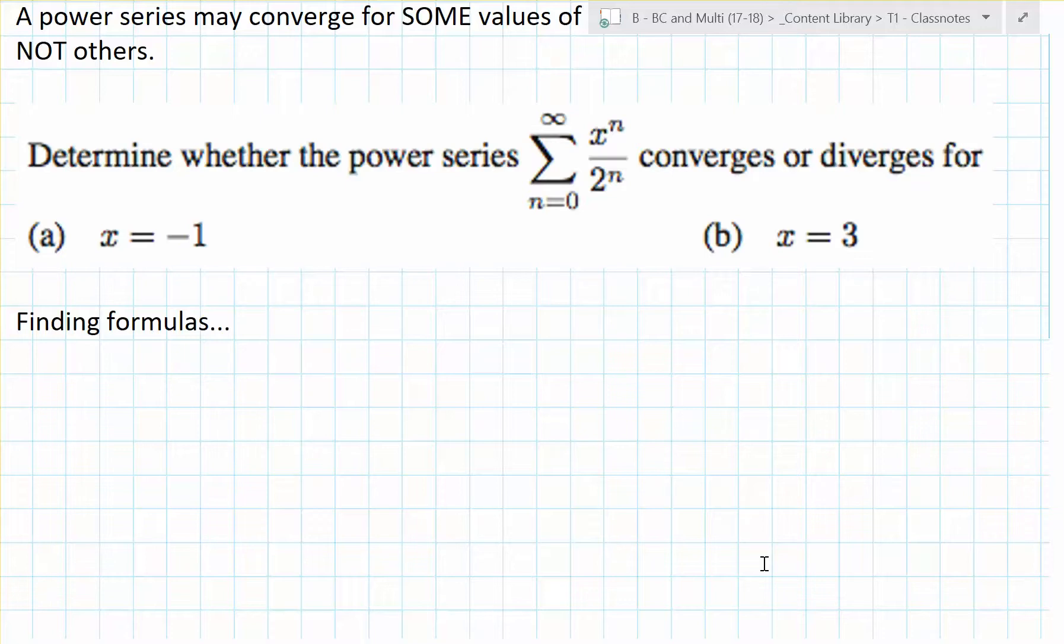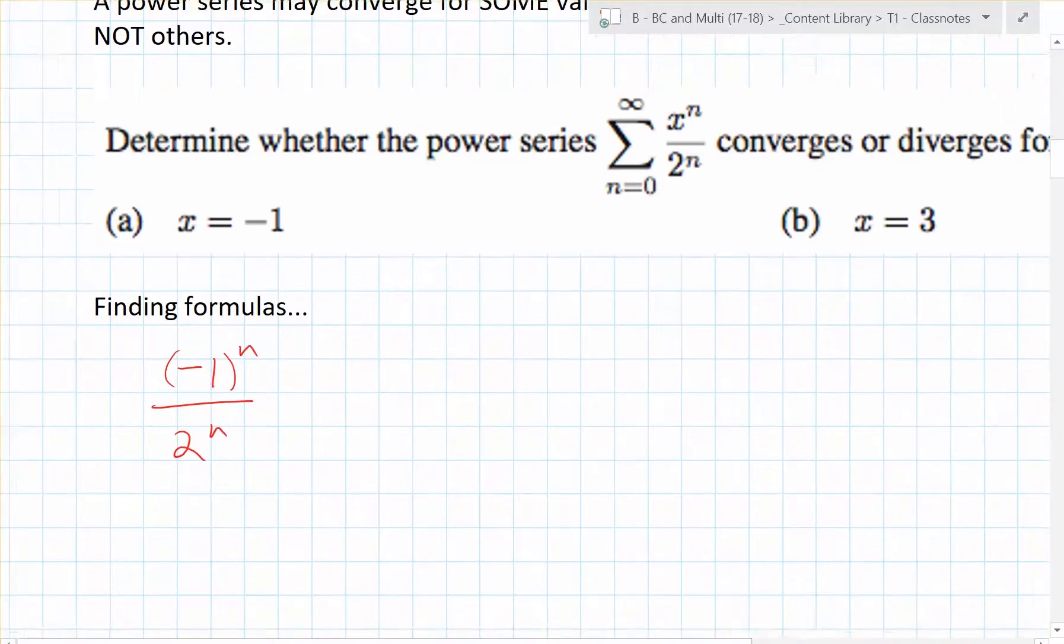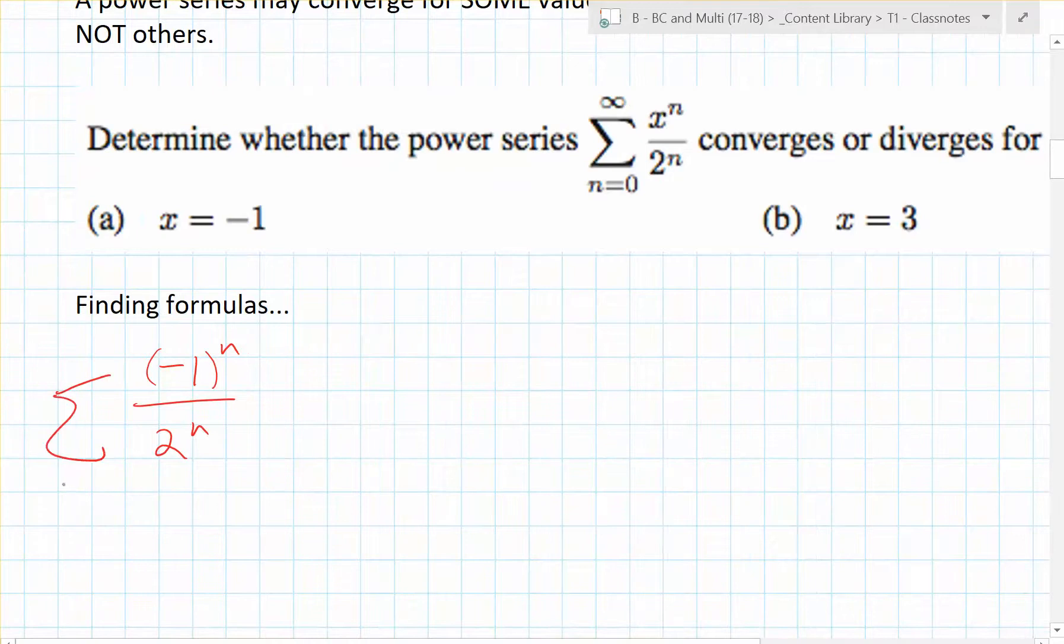If I were to plug negative 1 into this, what are the first few terms going to be? It's negative 1 to the n over 2 to the n, summation from n equals 0 to infinity. If I plug in 0 first, what do I get? Does that converge or diverge?